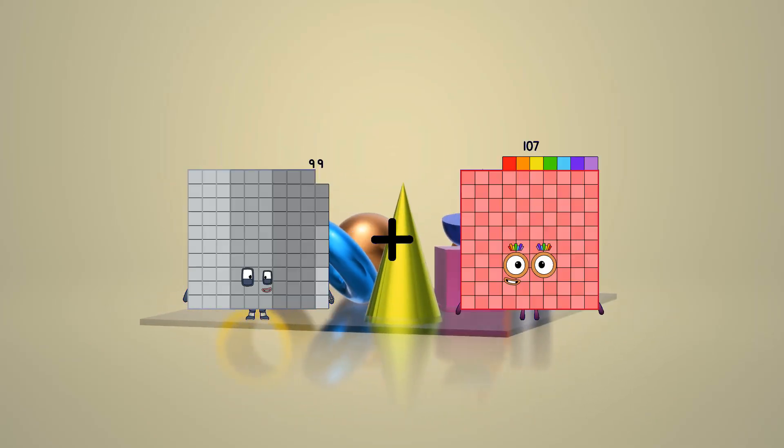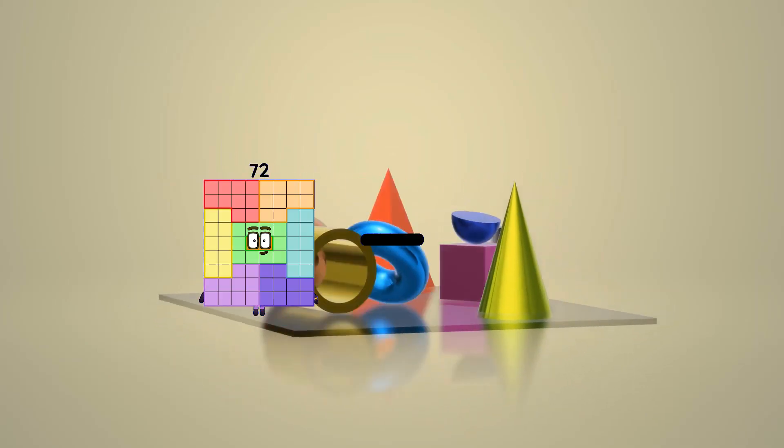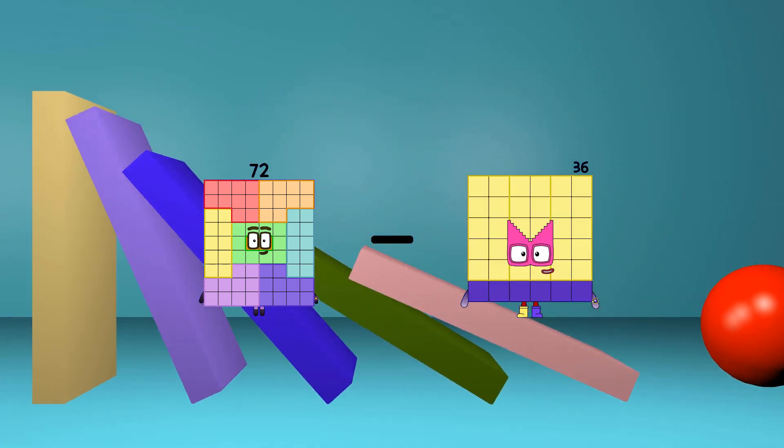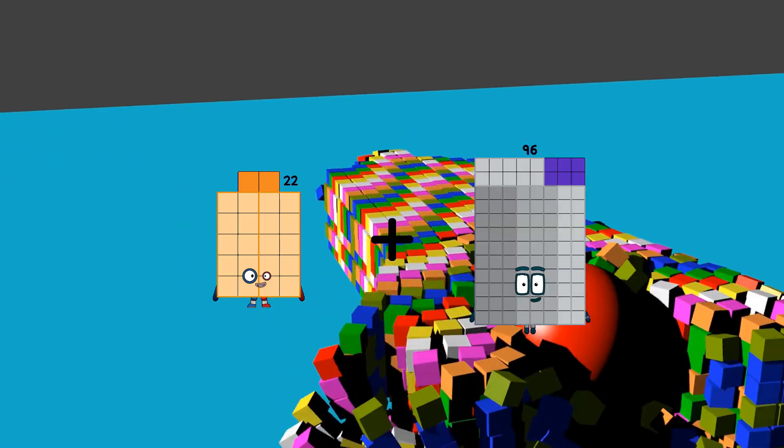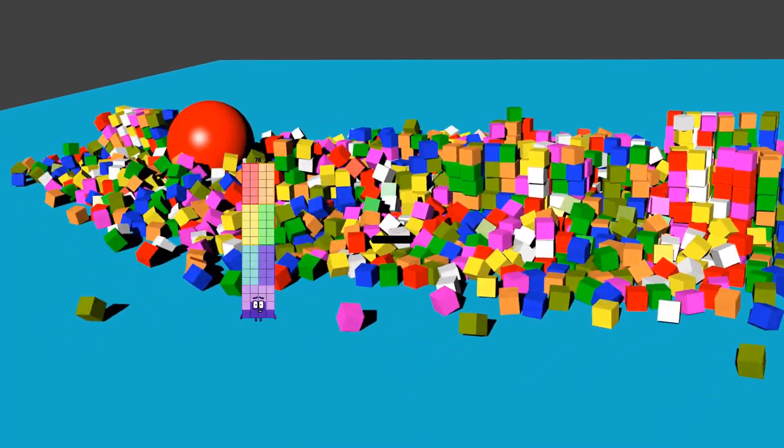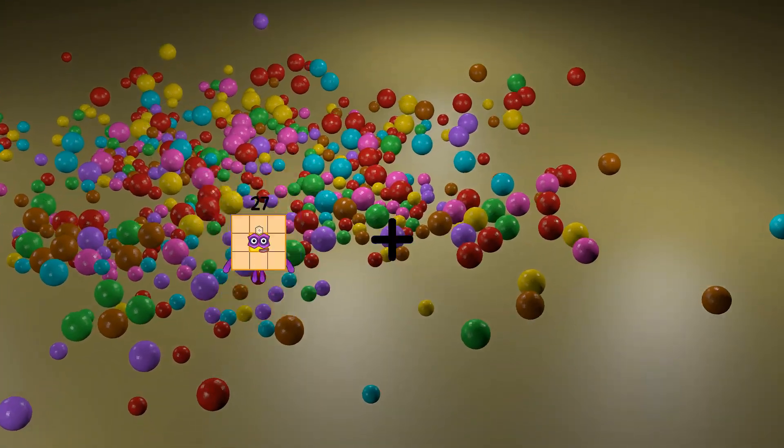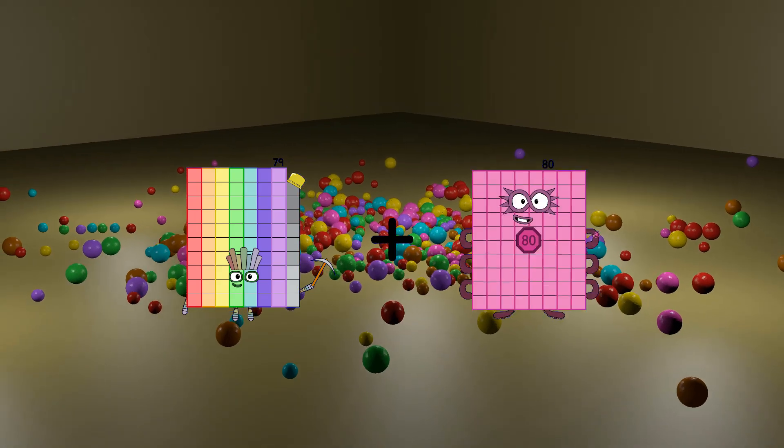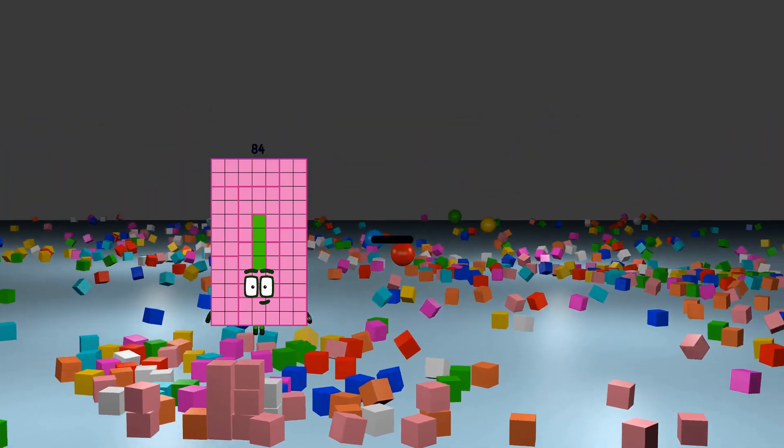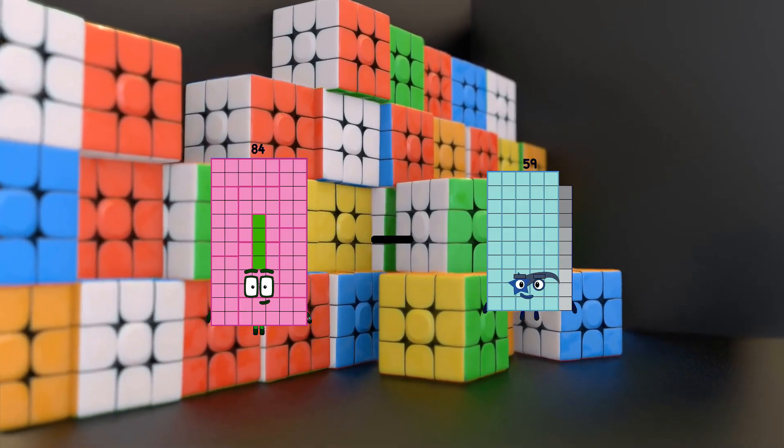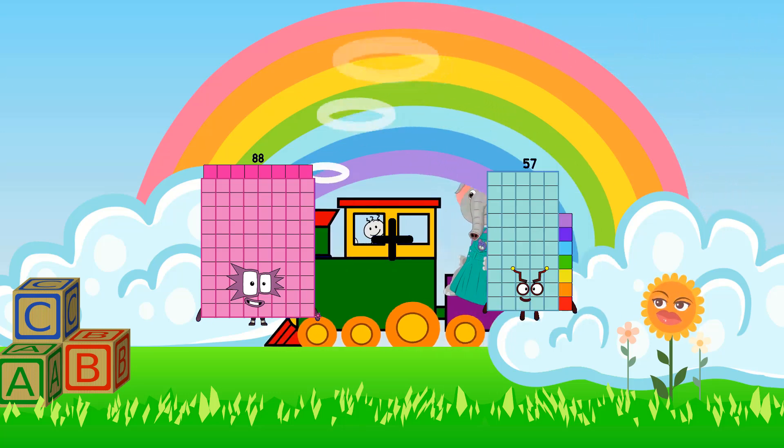99 plus 38 equals 137. 72 minus 36 equals 36. 22 plus 96 equals 118. 51 minus 21 equals 30. 79 plus 57 equals 136. 84 minus 59 equals 25. 88 plus 57 equals...